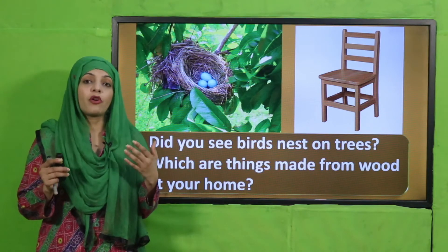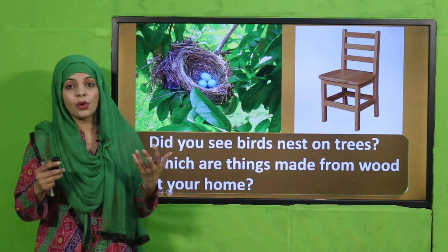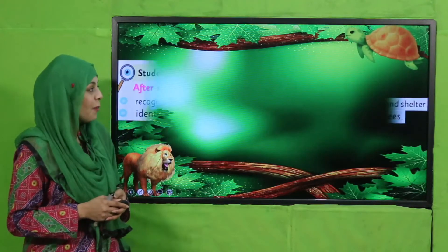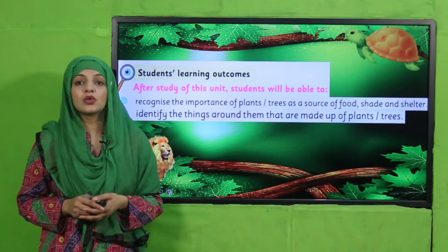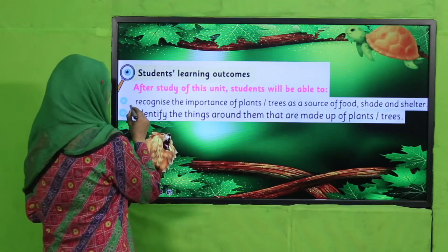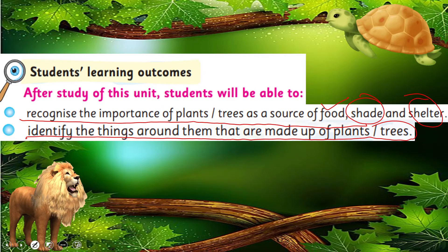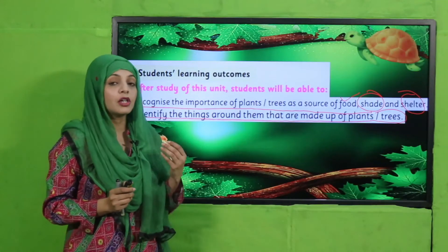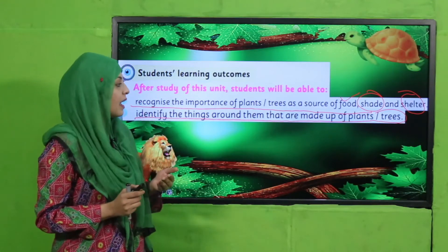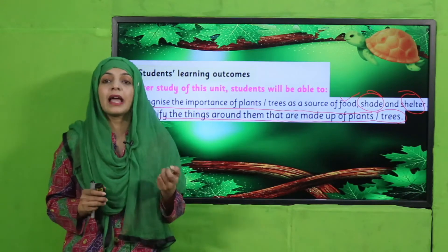Now my dear students, let's quickly look at today's Student Learning Outcomes. In today's lecture, students will be able to recognize the importance of plants — shade and shelter, food (already discussed) — and identify the things around them that are made of plants and trees. Is lecture mein hum plants ke baare mein padhenge ke plants hume shelter aur shade dete hain, aur bohut si cheezein jo hamare irdgird hain wo plants aur trees se bani hain.